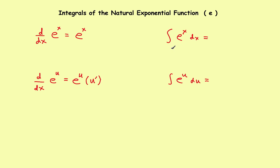In this video, we'll look at the integrals of the natural exponential function e. Before we get to the integral rules, let's take a quick look at the derivatives once again. The derivative of e to the x is e to the x for a simple x. If the exponent is more complicated, you use a two-part rule: the derivative of e to the u is the original e function times the derivative of its exponent.